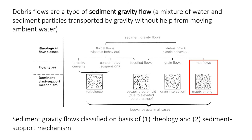Debris flows, sometimes called mud flows or cohesive debris flows, are an example of something called a sediment gravity flow. Sediment gravity flows are mixtures of water and sediment that move because of gravity, not because of the flowing water itself. In rivers, the water is responsible for moving the sediment, but in sediment gravity flows, the water and the sediment move together as a package with gravity as the driving force.